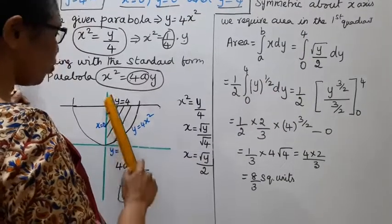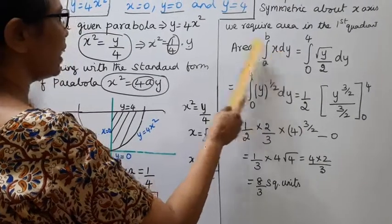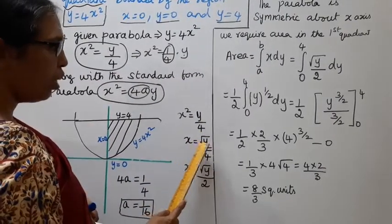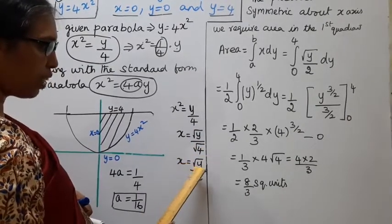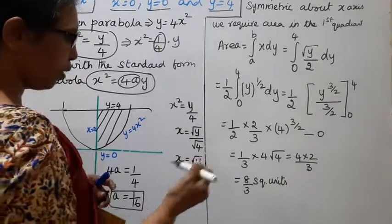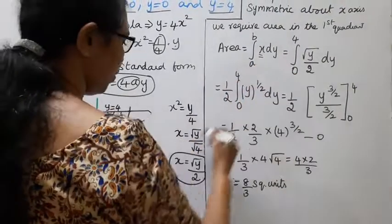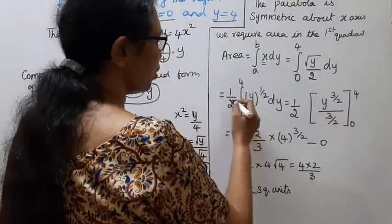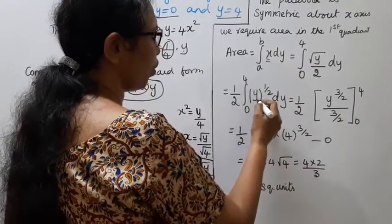We integrate from 0 to 4. From y equal to 4x square, x square is equal to y by 4. Taking the square root, x is equal to square root of y divided by 2.